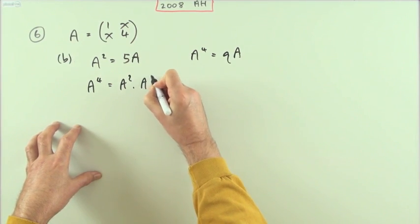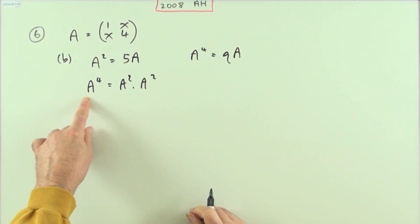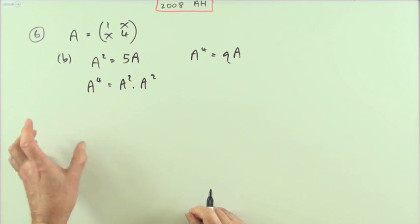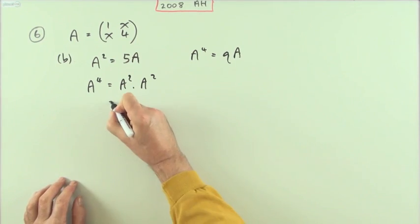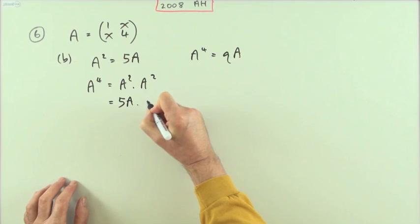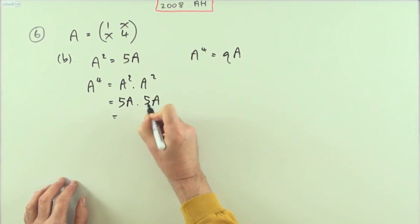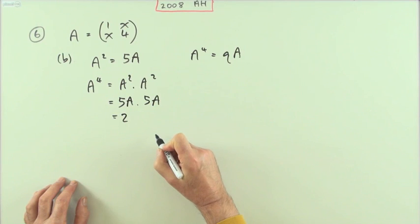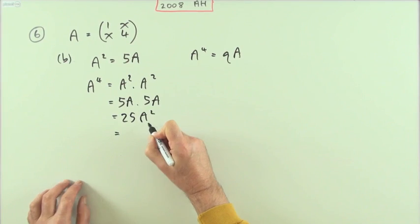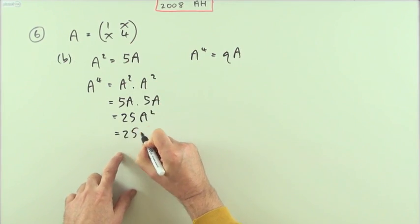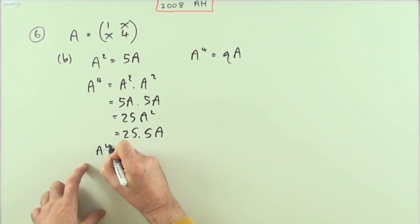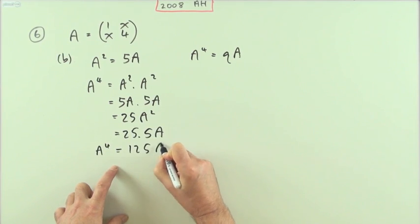Well, A to the four would be A squared times A squared. A to the four means an A times an A times A times A, but these multiplications are associative, so I can group them however I like. There's a convenient grouping because I know the answers: A squared is 5A and A squared is 5A. You can take those scalar multiples to the front, so that's going to be 25, and A times A is A squared. But there again, A squared is 5A, so 25 times 5A means that A to the four is 125A.